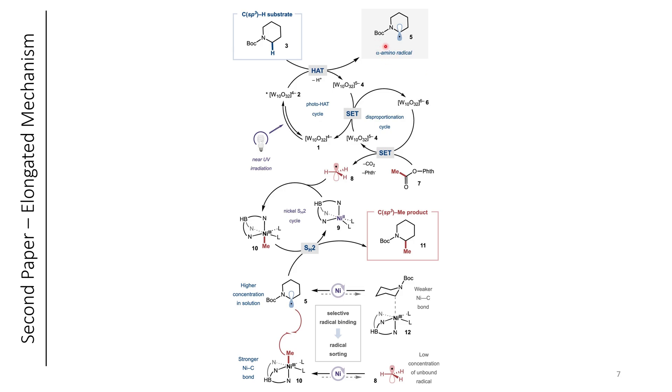So now that we have this nickel(III) with the methyl bound, this alpha-amino radical that was generated earlier is able to attack at the methyl, reducing the nickel to a nickel(II) species, and forming compound 11 here, where we formed a late-stage methylated product. You might be wondering why the radical that we formed earlier doesn't also bind to the nickel. Well, it does, it's just not as strong of a bond as the methyl radical is. So since the methyl radical is going to bind to the nickel more preferentially, we're able to selectively cross-couple the two different radicals through this SH2 process.